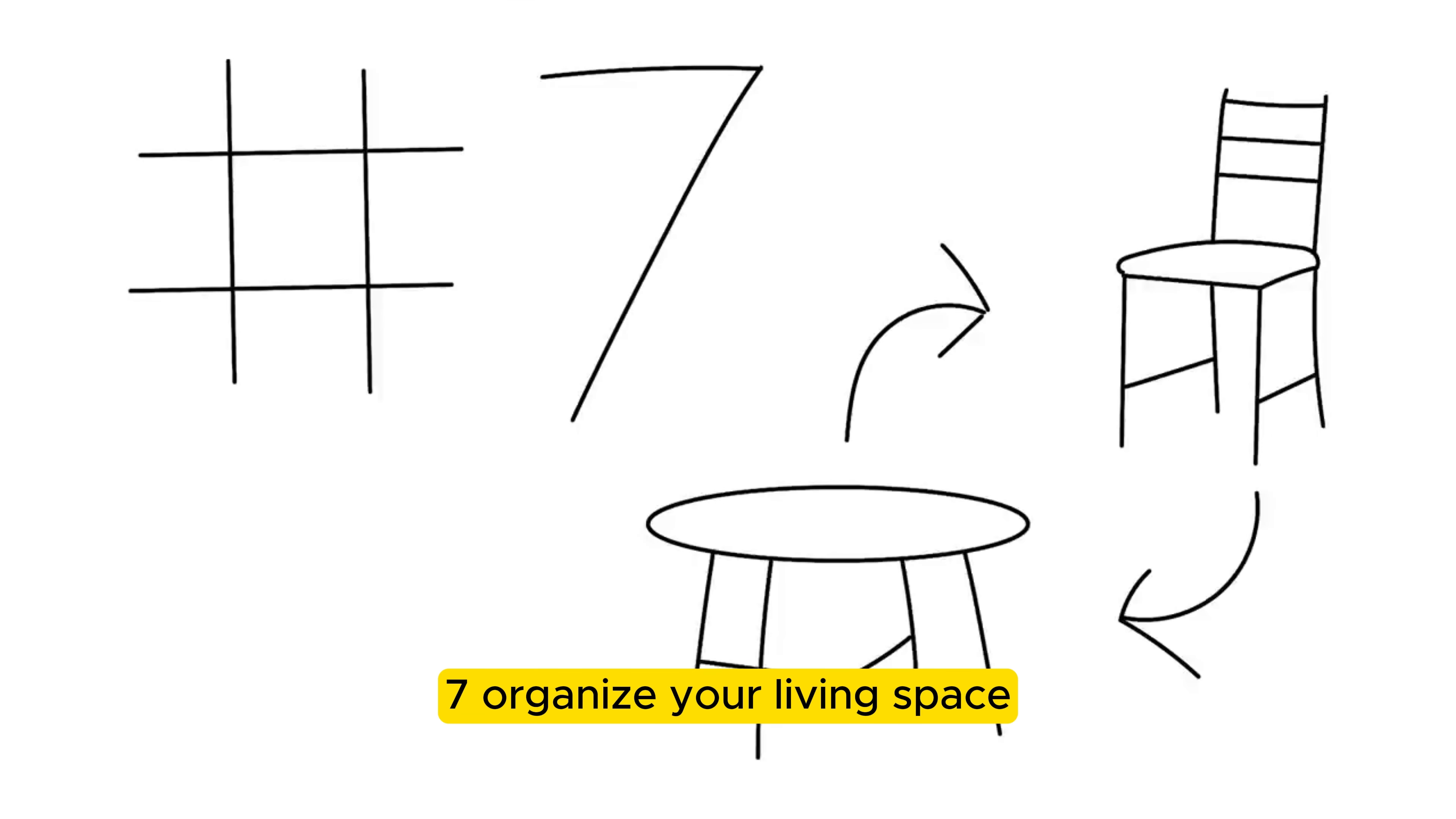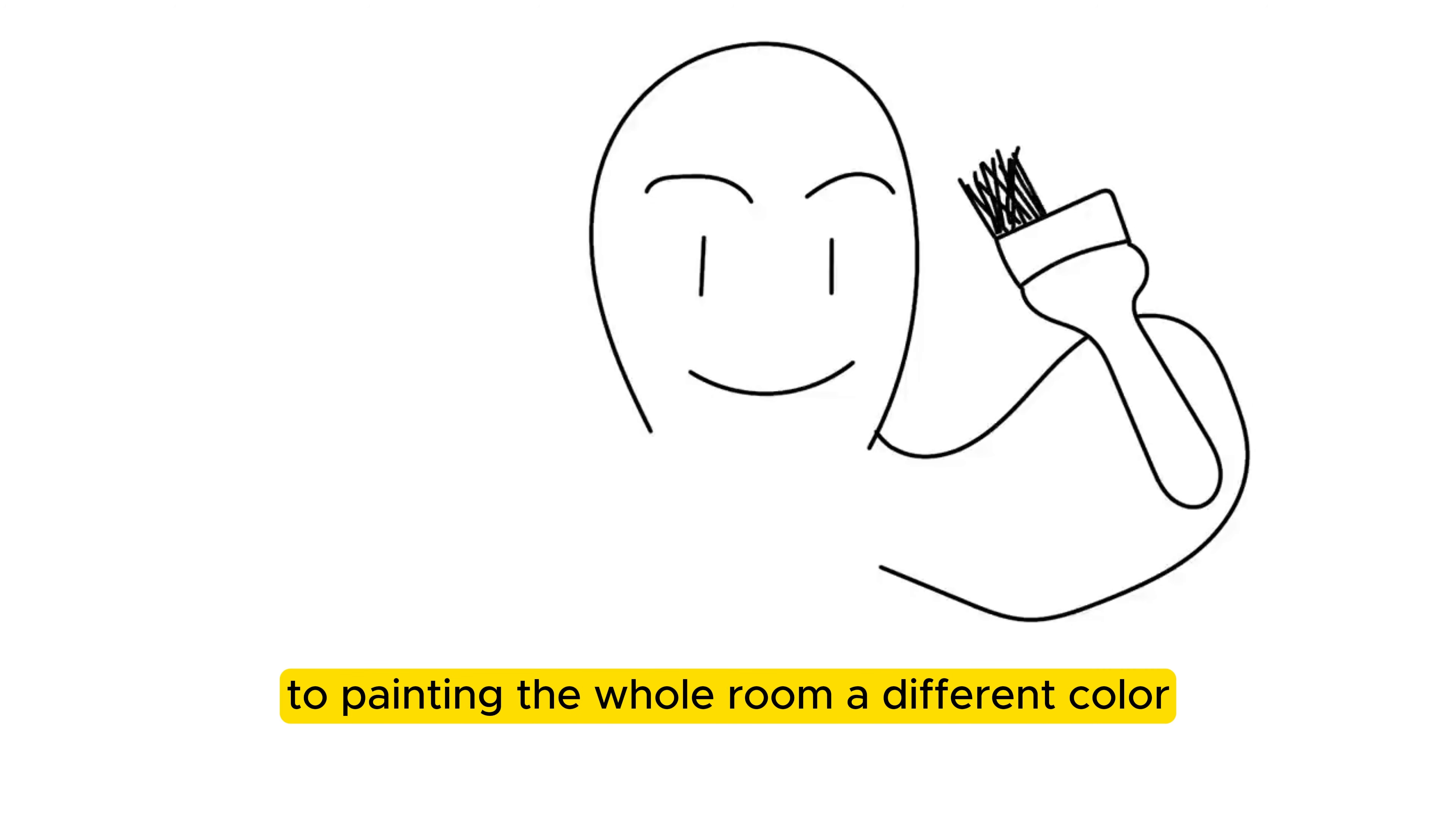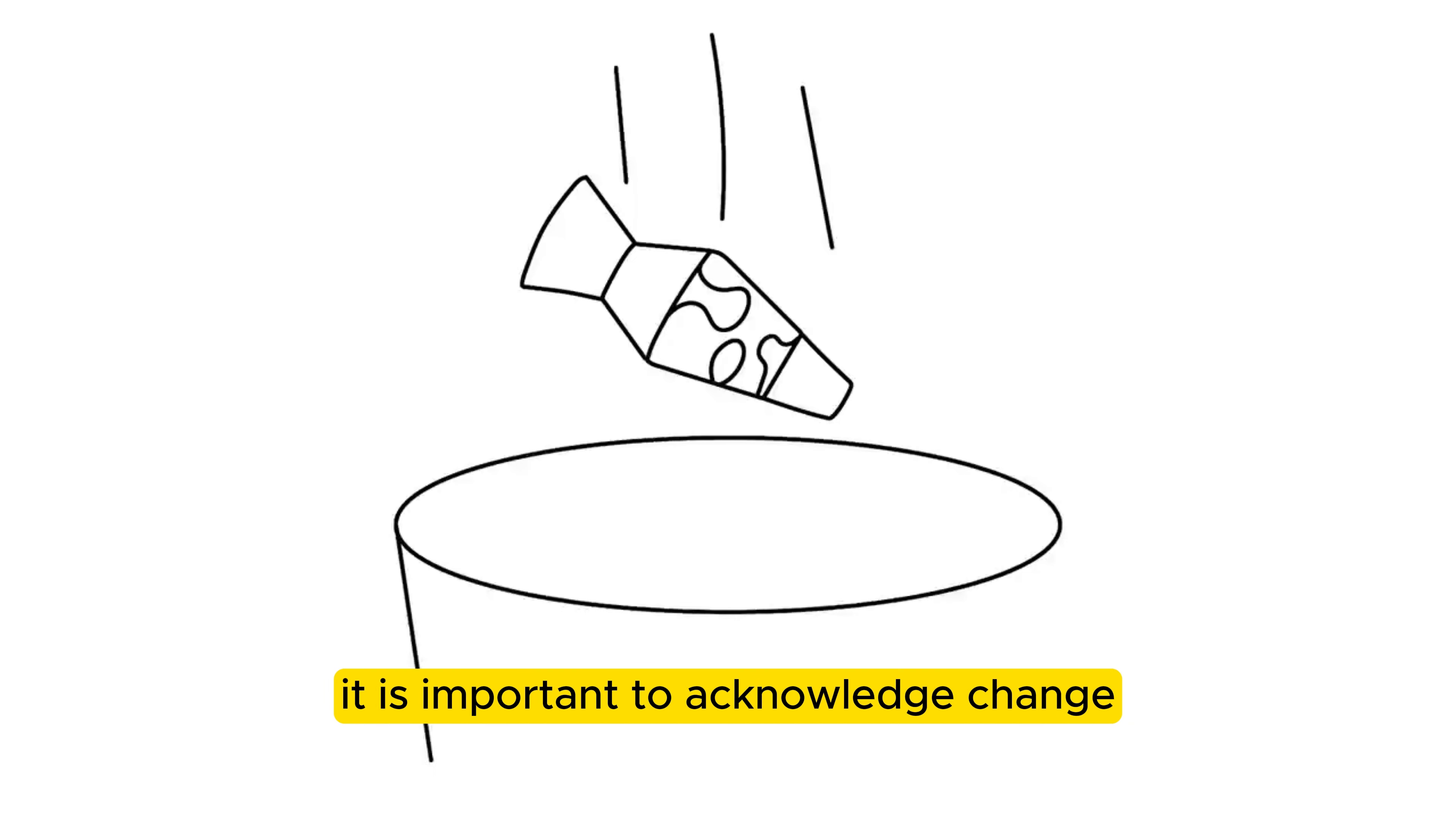7. Organize your living space. Seeing things the two of you shared will bring forth torrents of tears and painful memories. To remedy this, you can change things up and redecorate your environment. It can be as simple as rearranging the sofa and coffee table to painting the whole room a different color and changing the drapes. Remove painful triggers that remind you of the past. Regardless, if your home reminds you of your past lover, it is important to acknowledge change. Embrace it and accept it to learn from it.